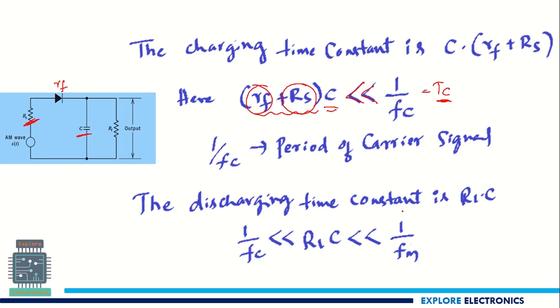And also the discharging time constant, that is RL × C. This RL × C should be greater than the period of the carrier signal and should be less than the period of the modulating signal. So this is the condition we need to maintain for the envelope detector to detect the modulating signal from the AM wave.